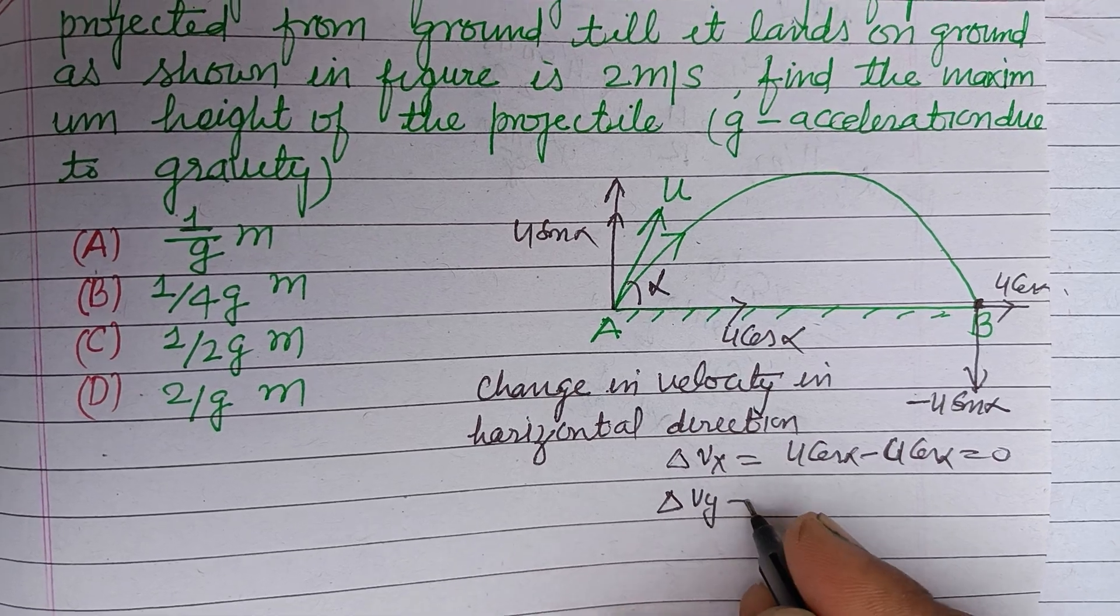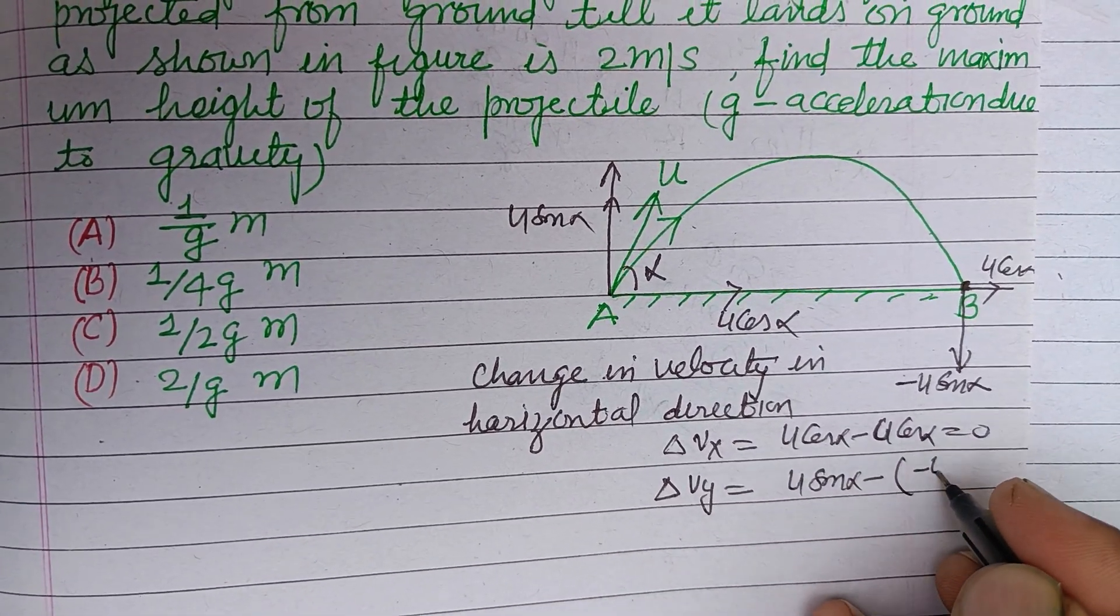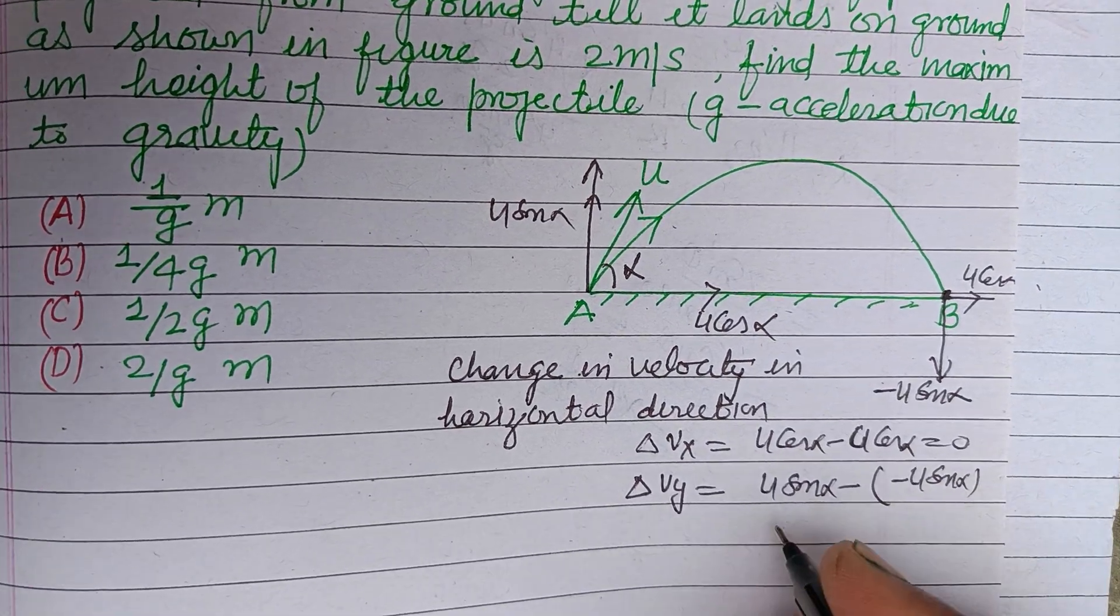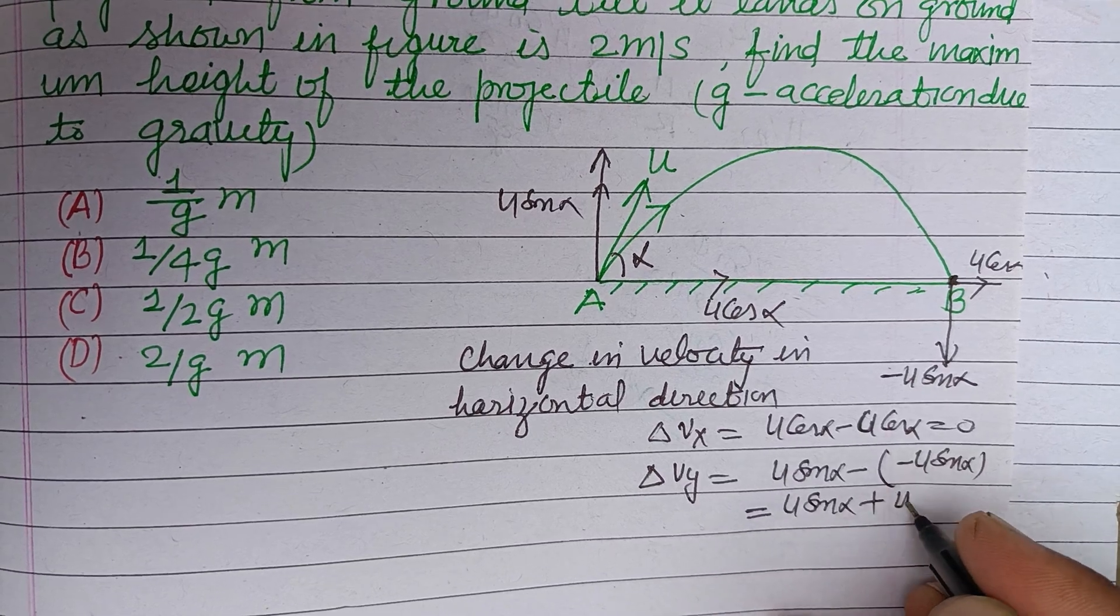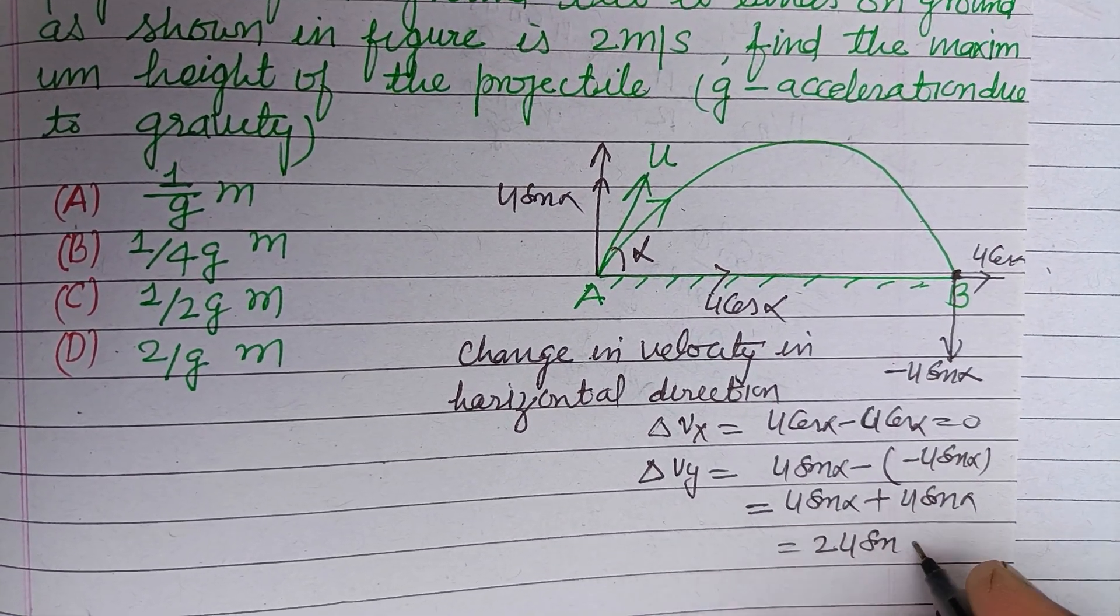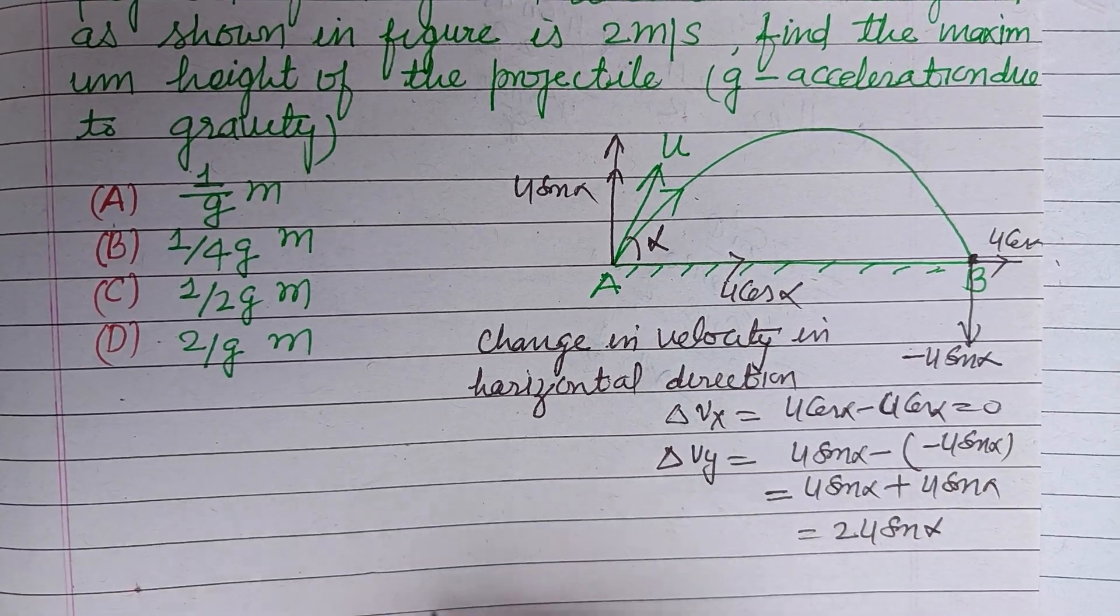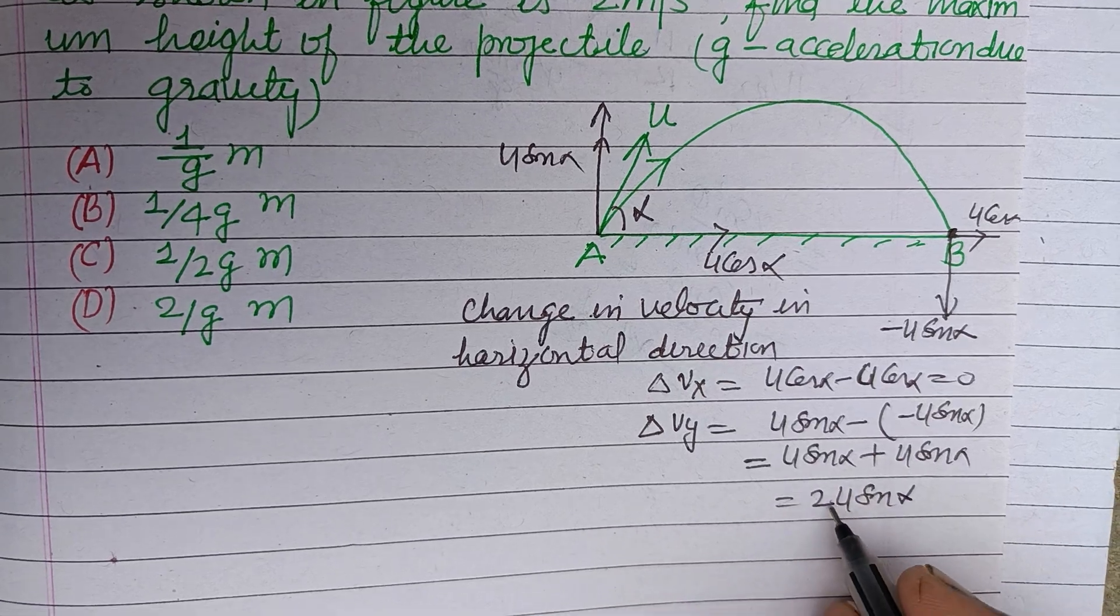And change in vertical direction, del Vy equals u sine alpha minus minus u sine alpha. So this becomes u sine alpha plus u sine alpha, that is 2u sine alpha. Therefore change in velocity is 2u sine alpha.